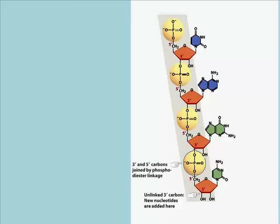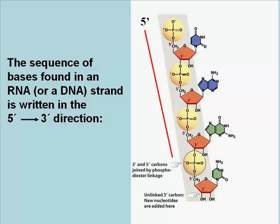Note here that a nucleic acid has directionality. We say it has a 5' and a 3' end. The 5' end refers to the nucleic acid with a free phosphate group on the 5' carbon of the sugar — that's shown at the top here. The 3' end refers to the free hydroxyl group on the number 3 carbon of the sugar at the other end. Now this is RNA. By convention, we will write nucleic acid sequences in the 5' to 3' direction.